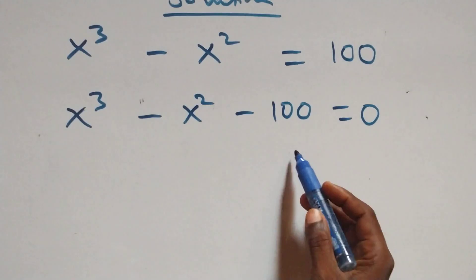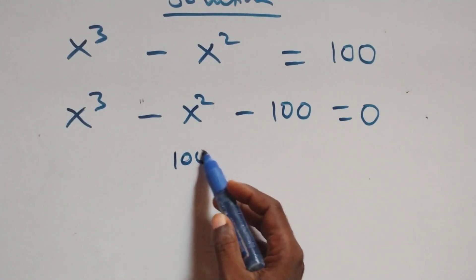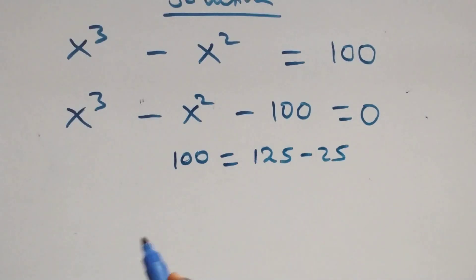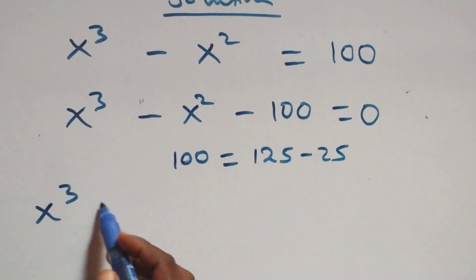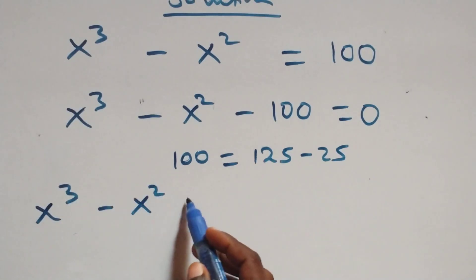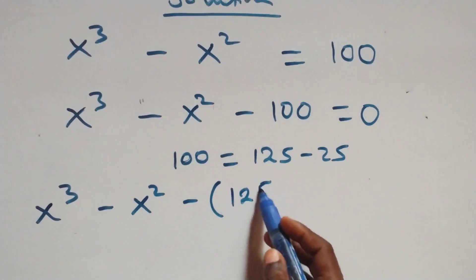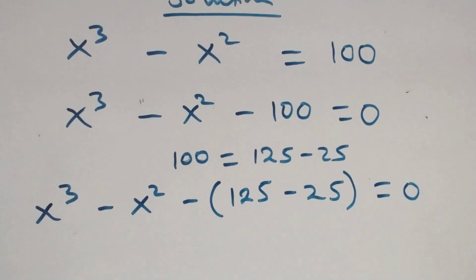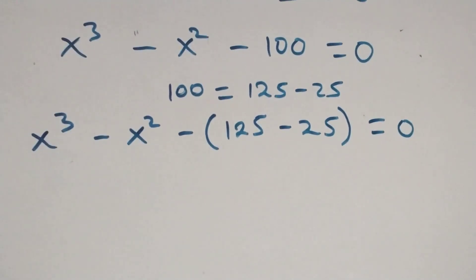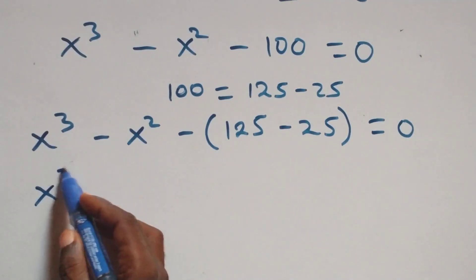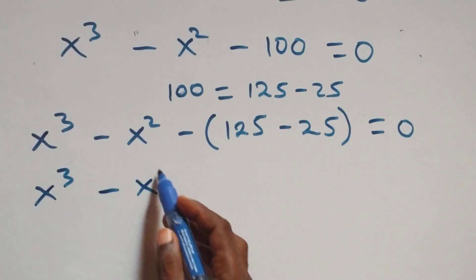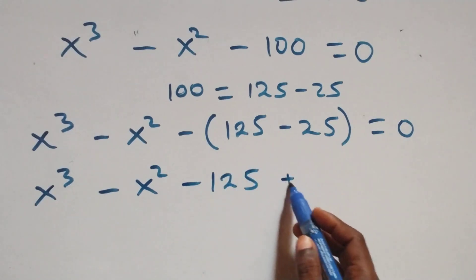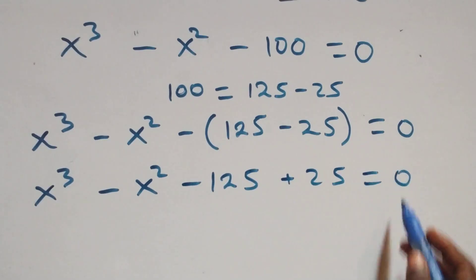Next step: we can write 100 as 125 minus 25. What we have here becomes x raised to the power 3 minus x squared minus (125 minus 25) equals to 0. Opening these brackets, we have x raised to the power 3 minus x raised to the power 2 minus 125 plus 25 equals to 0.